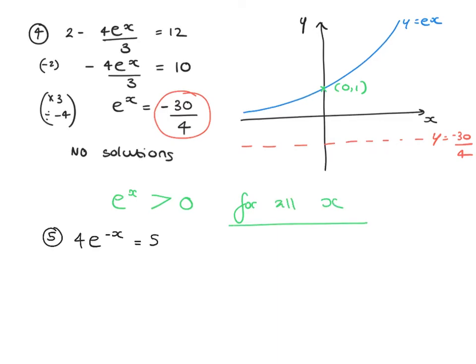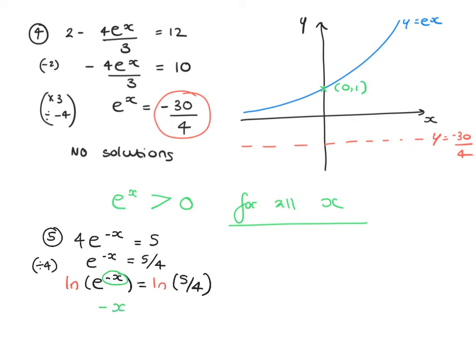For question 5, with 4 e to the negative x equals 5: divide by 4, giving e to the negative x equals 5 over 4. Taking ln of both sides: ln of e to the negative x equals ln of 5 fourths. The left side simplifies to negative x, so x equals negative ln of 5 over 4. The negative can be moved to become the power, so x equals ln of 4 fifths.